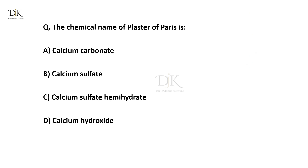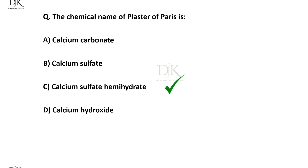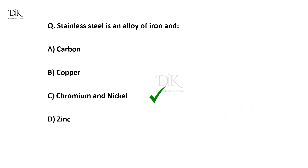What is the chemical name of plaster of Paris? The right answer is calcium sulphate hemihydrate. Stainless steel is an alloy of iron and? The right answer is chromium and nickel.